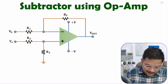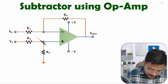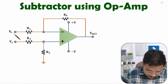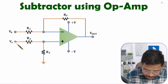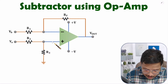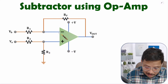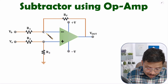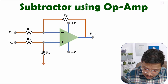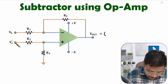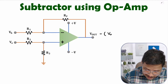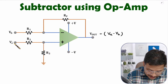If you observe this circuit, we have two inputs Va and Vb. Va is given to the positive terminal, which means the non-inverting terminal. Vb is given to the negative terminal, which means the inverting terminal. We also have negative feedback. If this circuit is working as a subtractor, the output will be Va minus Vb, because Va is given to the positive terminal and Vb is given to the negative terminal.